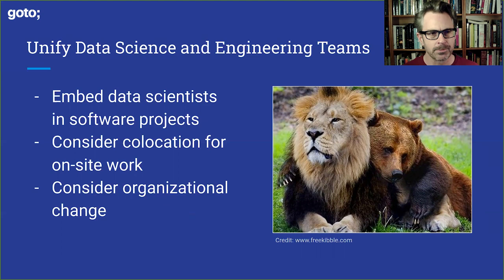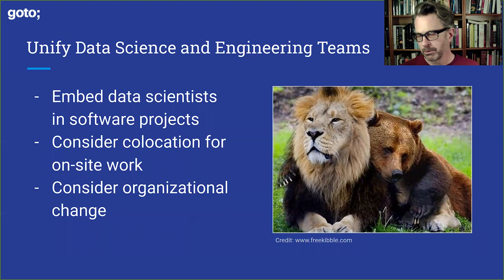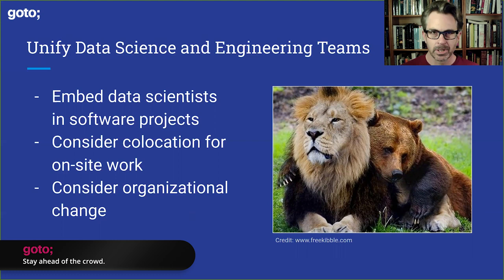Key number one: unified data science and engineering teams. There are three parts here in order from simplest to most complex. The simplest would be to embed the data scientist in a software project — that probably makes sense to a lot of people but it's kind of rare. Data scientists often are off on their own, solo or small team projects, and they have these odd artifacts — they'll hand off a notebook or some other thing they expect to land in production. That's really quite a nonsensical way to build software. It's not sustainable.